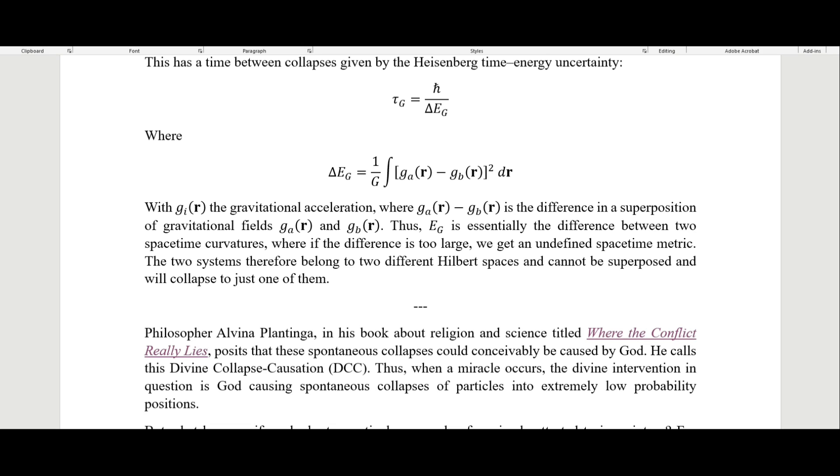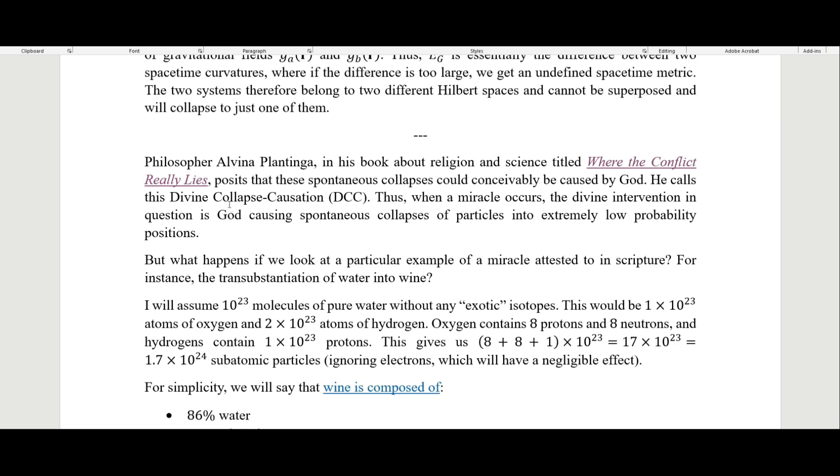Another one that I came across is from philosopher Alvin Plantinga, which in his book about religion and science titled Where the Conflict Really Lies, posits that these spontaneous collapses could conceivably be caused by God. He calls this divine collapse causation. The reason he posits this is because he wants to have a scientific explanation for how miracles might occur, where the divine intervention is God causing spontaneous collapse of particles into extremely low probability positions.